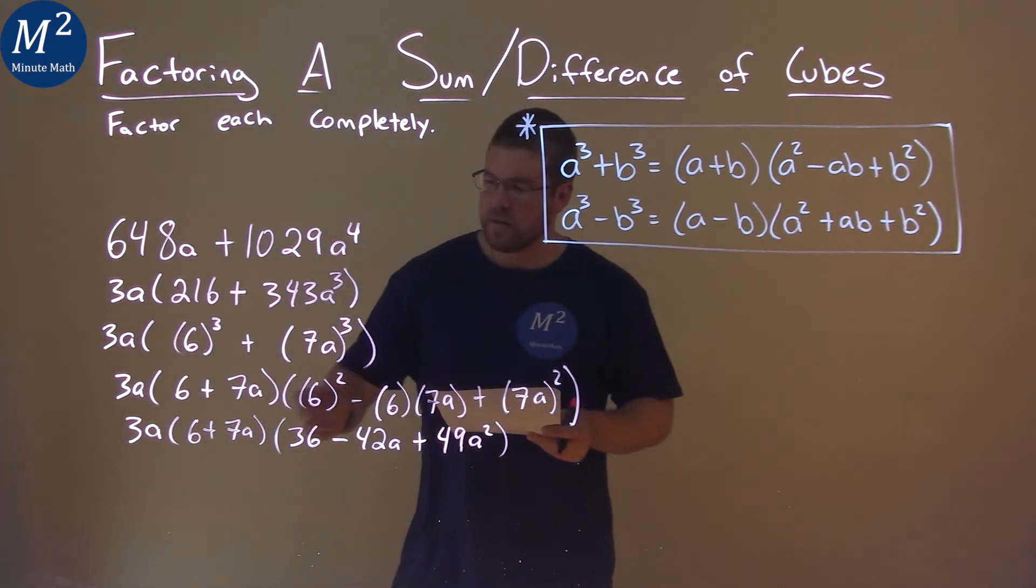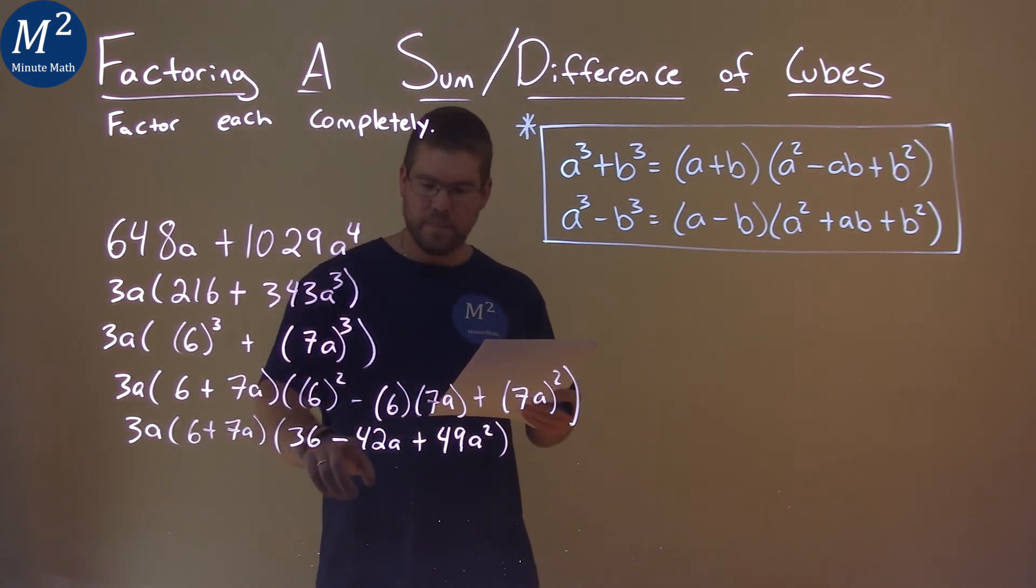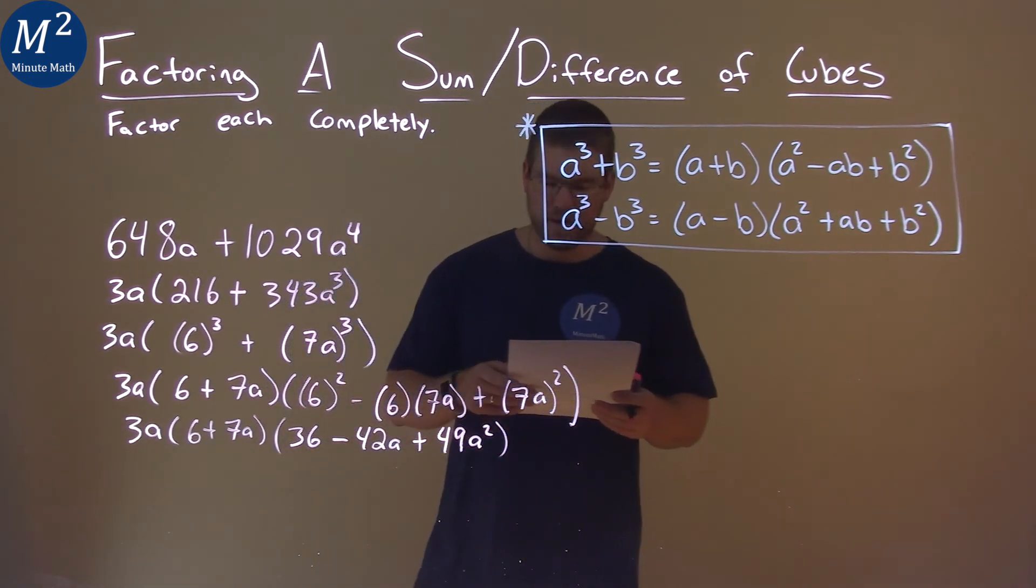So our final answer is 3a times (6 plus 7a) times (36 minus 42a plus 49a squared).